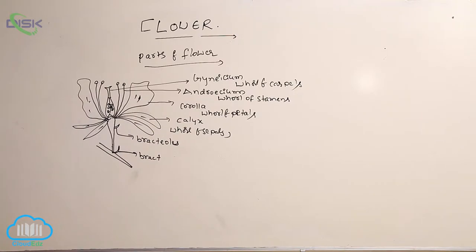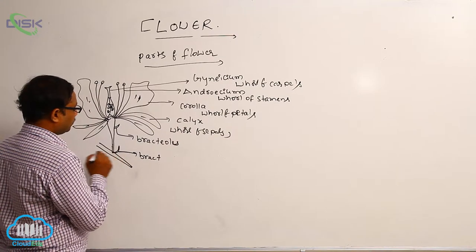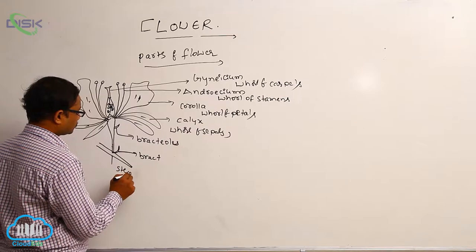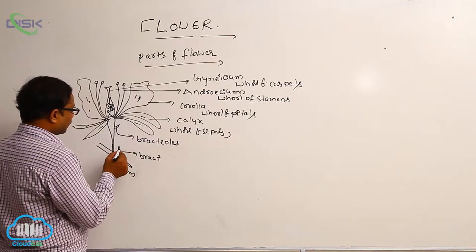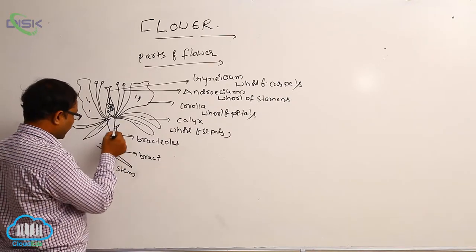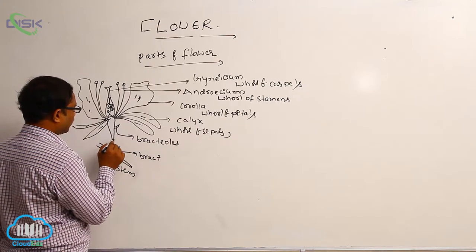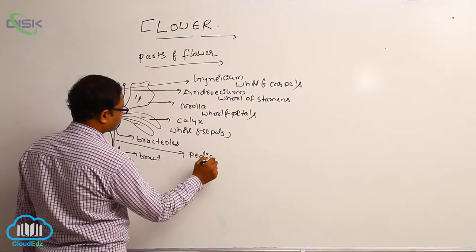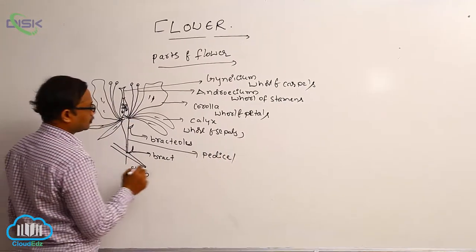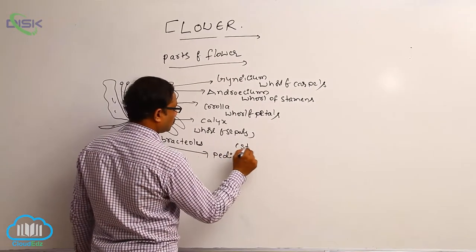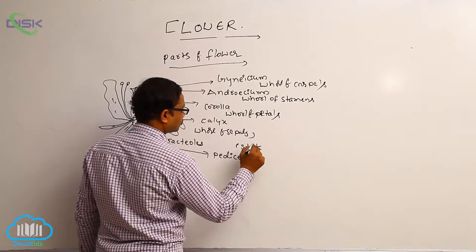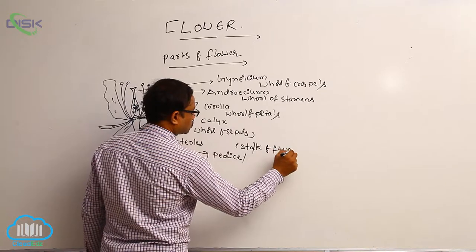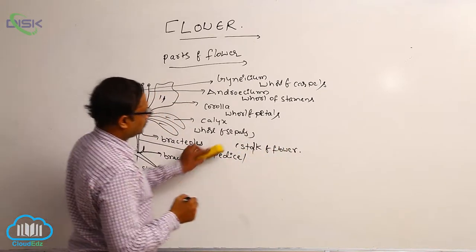So these are the parts of flower. Bract means it is, for example, the stem or branch. At the tip of that stem or branch, the flower has a stalk-like structure. That is known as the pedicle. Pedicle means stalk of flower.